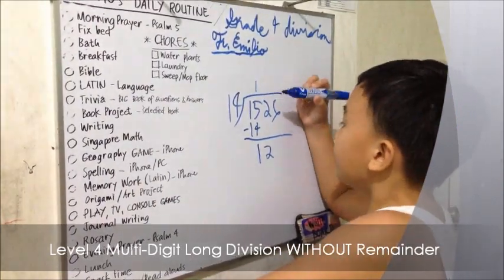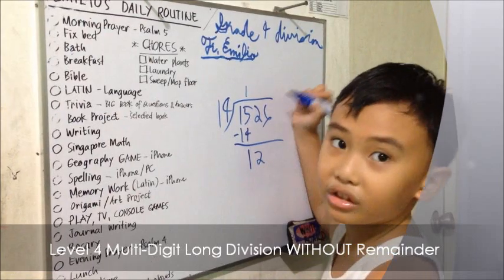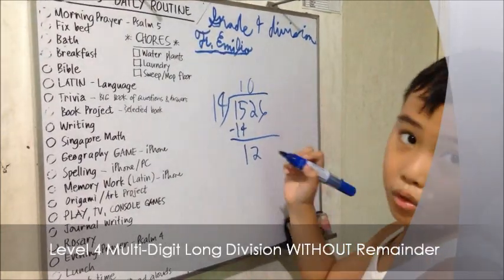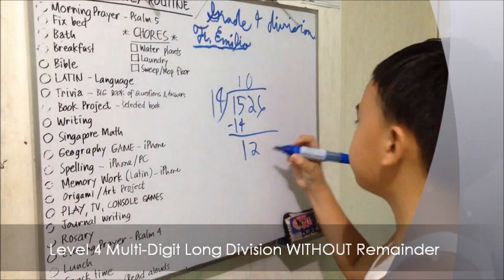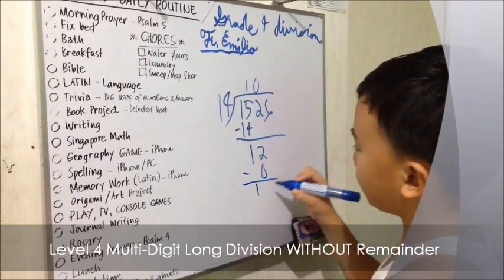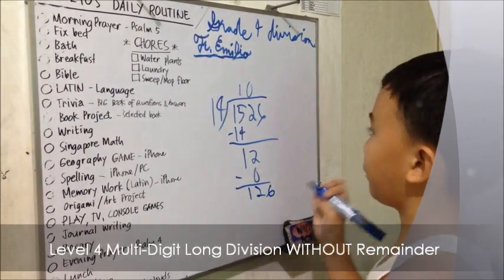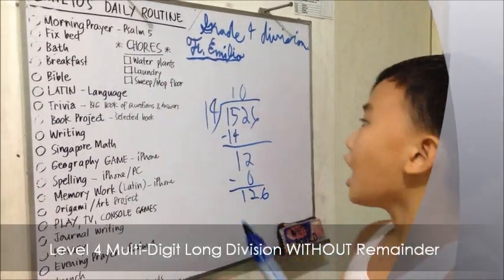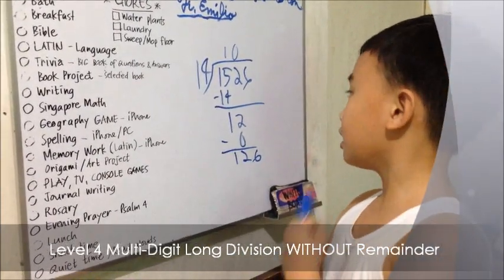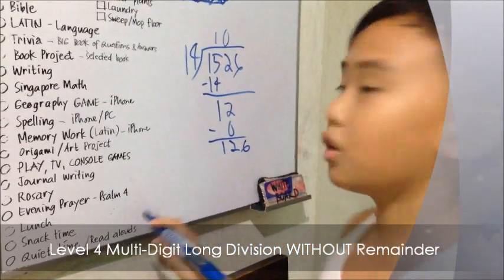So here we go. And obviously, if 12 divided by 14 is 0, 14 times 0 is 0. Minus... 12 minus 0 equals 12. Bring down 6. There we go. So let's see — how are we going to make 126 with just 14? It's pretty hard.